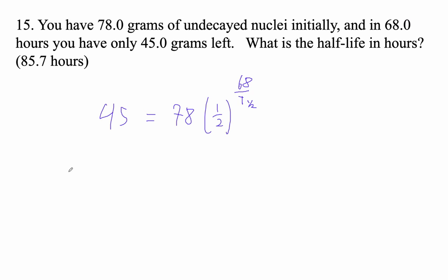And then you can do this. We can do the same thing. Ln 45 over 78 equals ln of 1 half times 68 over the half-life. Hmm. This cannot be solved. All right. So let's see. What do we want to do here? This is so complicated.